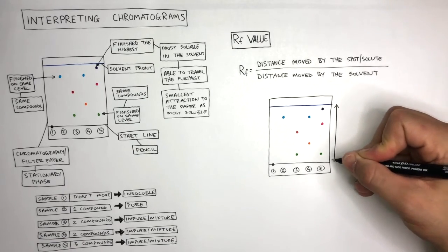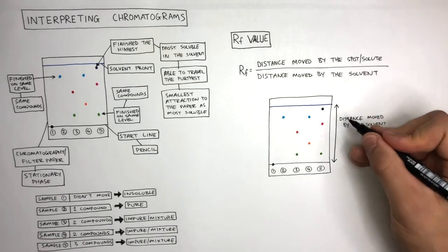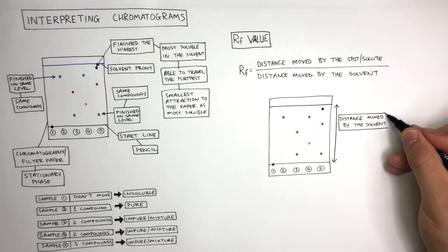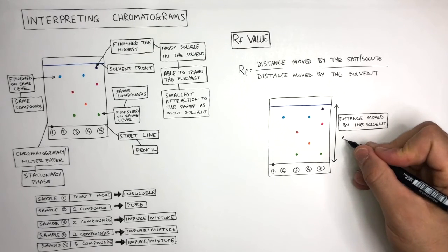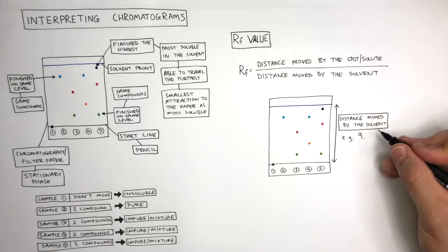Using a ruler, you measure the distance moved by the solvent from the solvent front to the start line. For example, here is going to be 9.2 centimeters.